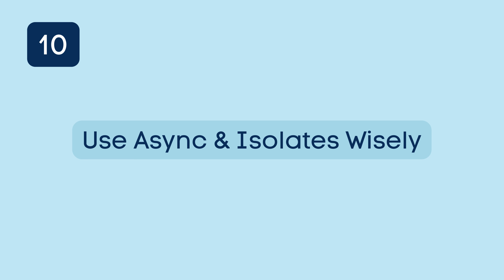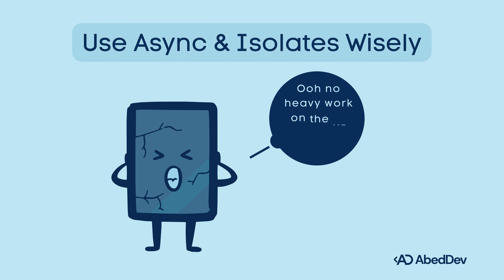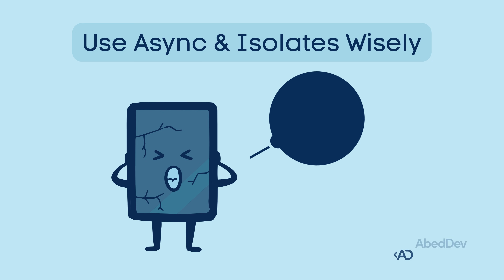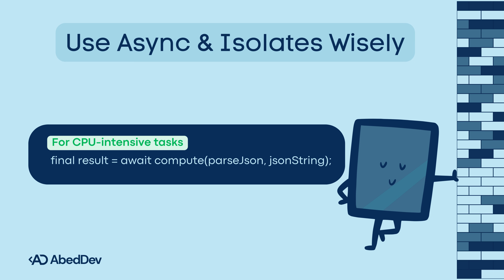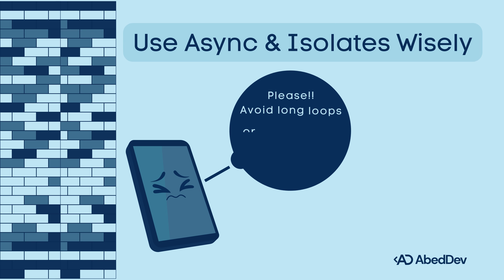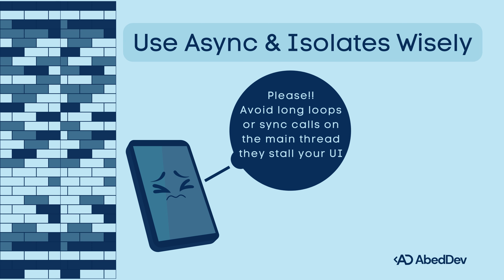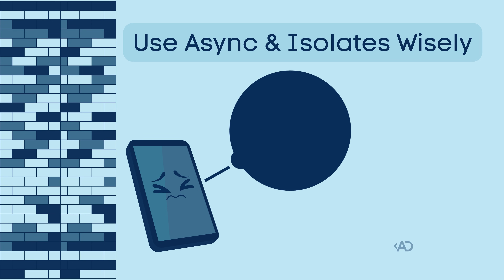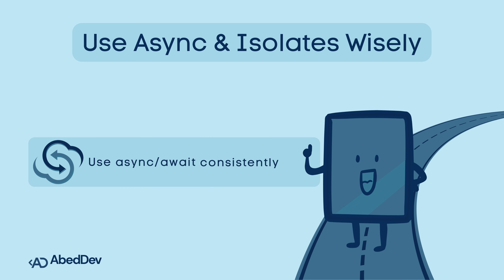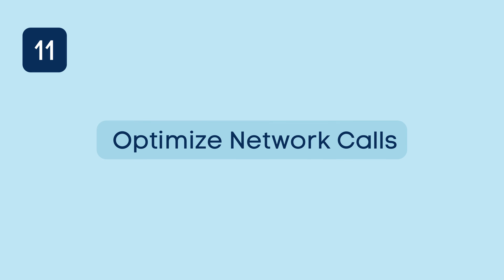Use async and isolates wisely. The Flutter UI thread must remain smooth. Offload heavy work to isolates or compute. Best practice: for CPU-intensive tasks like JSON parsing, use isolates. Never block the main thread with long loops or synchronous API calls. Use async and await consistently for readability.